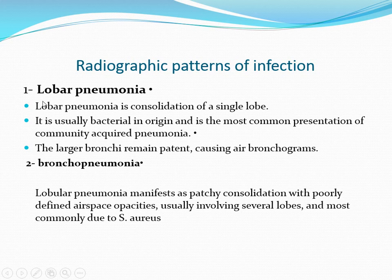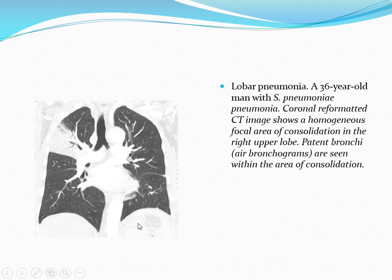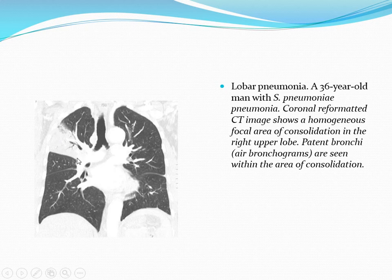Radiological patterns of infection: lobar pneumonia is consolidation of a single lobe, usually bacterial in origin and the most common presentation of community-acquired pneumonia. The larger bronchi remain patent, causing air bronchograms. Bronchopneumonia is a patchy consolidation with poorly defined airspace opacity usually involving several lobes, most commonly due to Staphylococcus aureus. The coronal CT image shows a homogeneous focal area of consolidation in the right upper lobe with air bronchogram seen within the consolidation, no signs of volume loss — just consolidation.